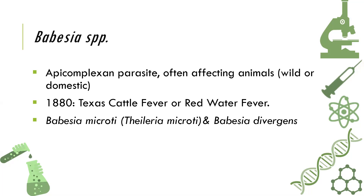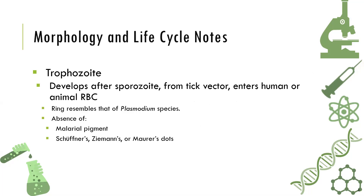Babesia, similar to malaria or malarial species, is a vector-borne parasite. The only difference between Plasmodium and Babesia is their vector. The vector of Plasmodium is the Anopheles mosquito, while the vector of Babesia is the tick.